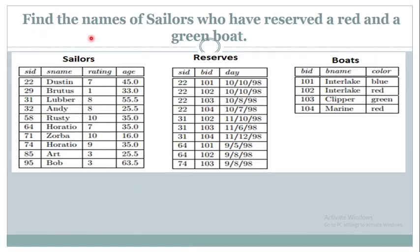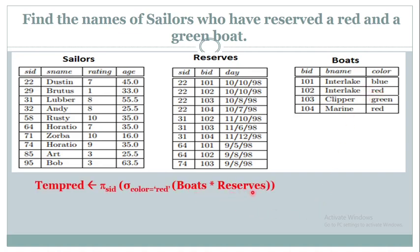Find the names of sailors who have reserved a Red and Green boat. Here 'Red and Green' means we need to use an Intersection operation. First, retrieve the sailor IDs who reserved a Red boat, then retrieve the sailor IDs who reserved a Green boat, and perform an Intersection. Join Boats and Reserves and select the tuple where color of the boat is red. After joining the two tables, the resultant relation has five columns — from those, just retrieve sailor ID using Pi notation. Sigma is used to select tuples or rows. The resultant relation is the sailor IDs who have reserved a Red colored boat.